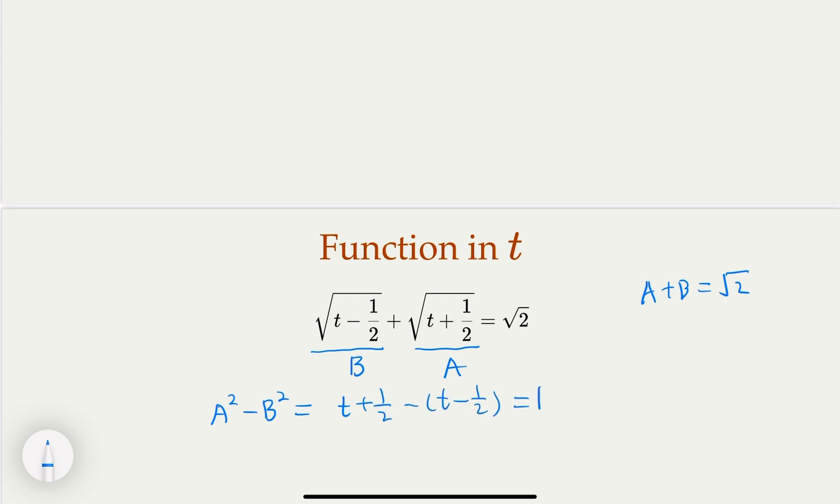Of course, a minus b, a² - b², you know that, is equal to (a - b)(a + b). What is a + b? It's the square root of 2. So what do we get? We get a - b equal half of 1 over √2, which is √2 over 2.